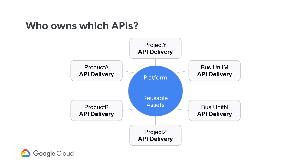So who owns which APIs? Ownership of the APIs or the components that make up those APIs is dependent upon the operating model. For example, in a hybrid model, the platform team is responsible for setting guidelines, standards, and the reusable assets. Reusable assets are in the form of shared flows or shared services that adhere to a common practice such as security, traffic management, or error handling.